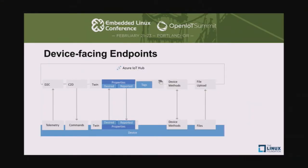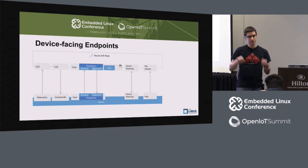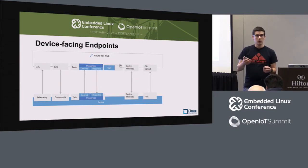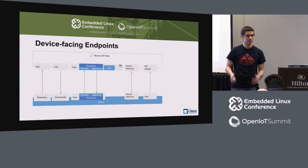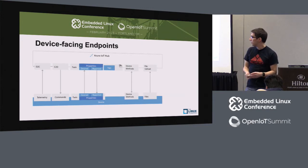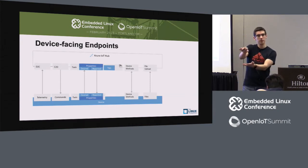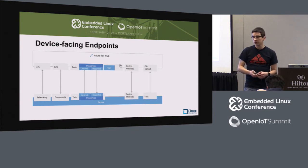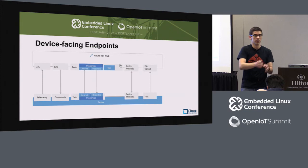Another thing you may want to do with devices is upload large amounts of data. For example, your device has been disconnected for a while — say it was a container on a container ship that's been at sea for six weeks. Coming into port, it has tons of telemetry data. Sending 50,000 messages one by one might not be the best way; you'd rather upload a big blob of data. That's what the file upload endpoint does. The device says, I have a bunch of data to upload; the service responds with a place to do that. And the nice thing is your device doesn't have to store multiple secrets from multiple endpoints — IoT Hub is brokering everything for you.